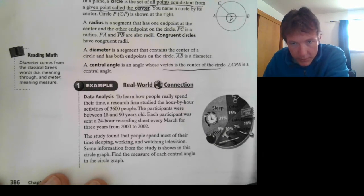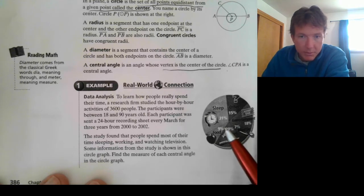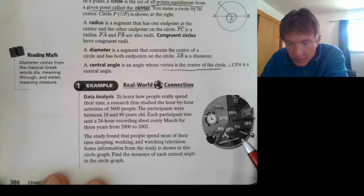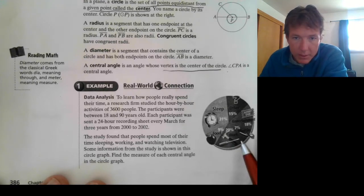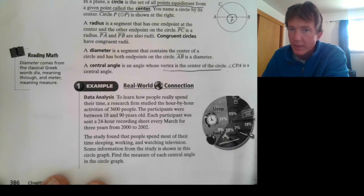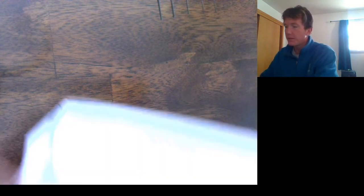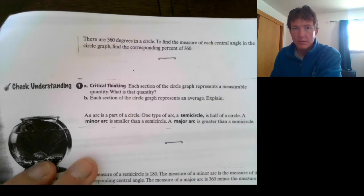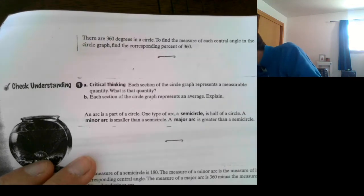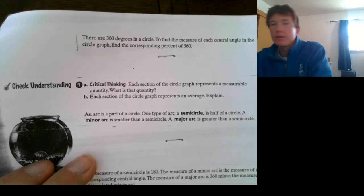So, you can kind of make out the circle graph here. Sleep is 31%. Work is 20%. Entertainment is 18%. It looks like Must Do is 7%. Food is 9%. Other is 15%. Let's go ahead and work on how to do this. So, there are 360 degrees in a circle. To find the measure of each central angle in the circle graph, we're going to find the corresponding percent of 360.